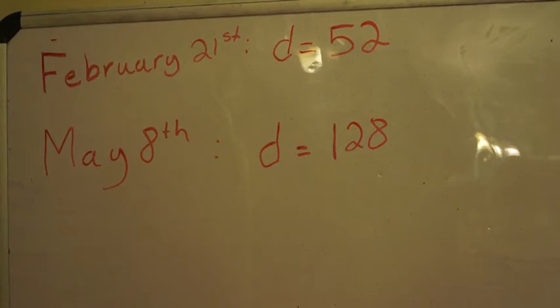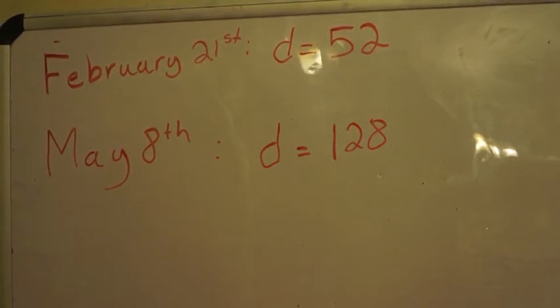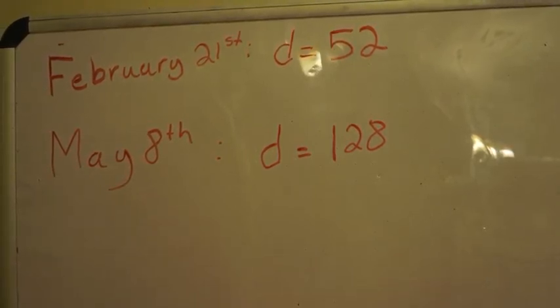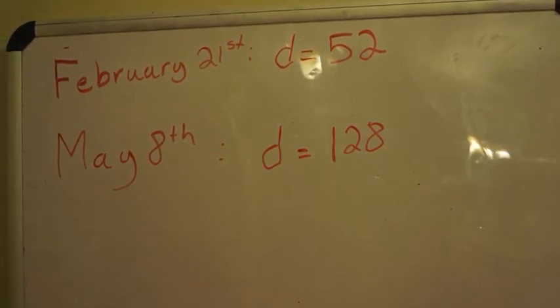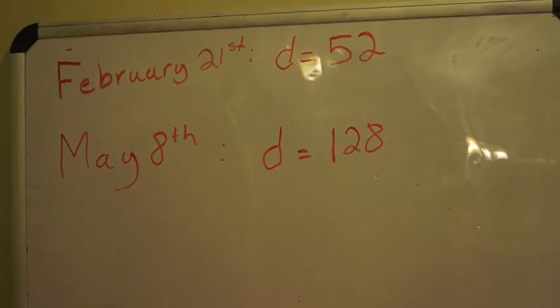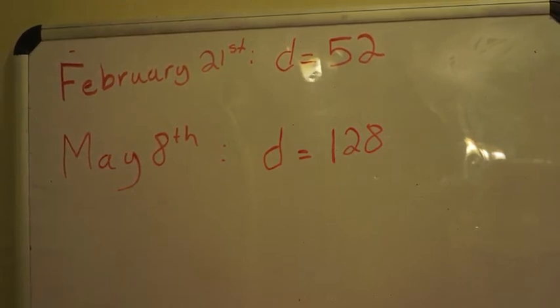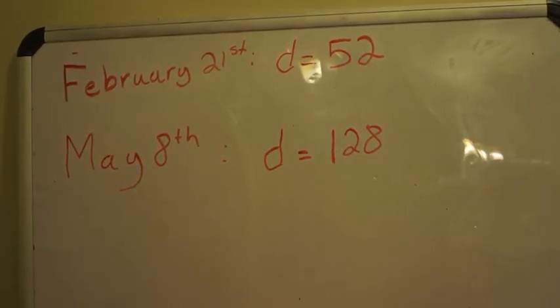The first thing we have to do is convert the dates given into the number of days into the year. You can do this by simply looking at a calendar. February 21st is 52 days into the year and May 8th is 128 days into the year.